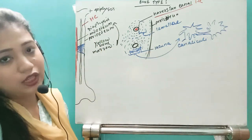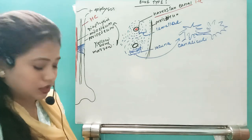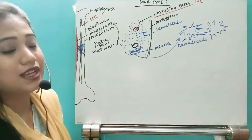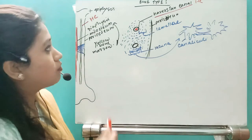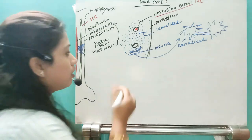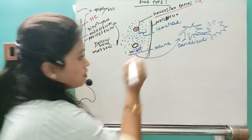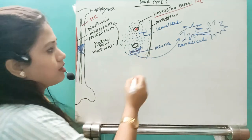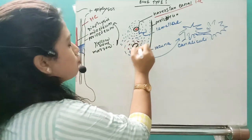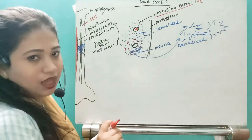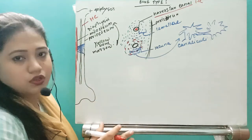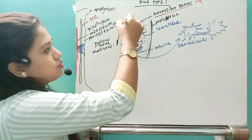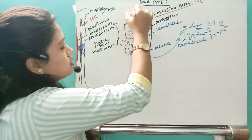Inside the lacunae — which are canaliculated — there are living cells. The cells of the bone are called osteocytes. Osteocytes will be present throughout the bone, not only in one region. So that will be known as osteocytes.